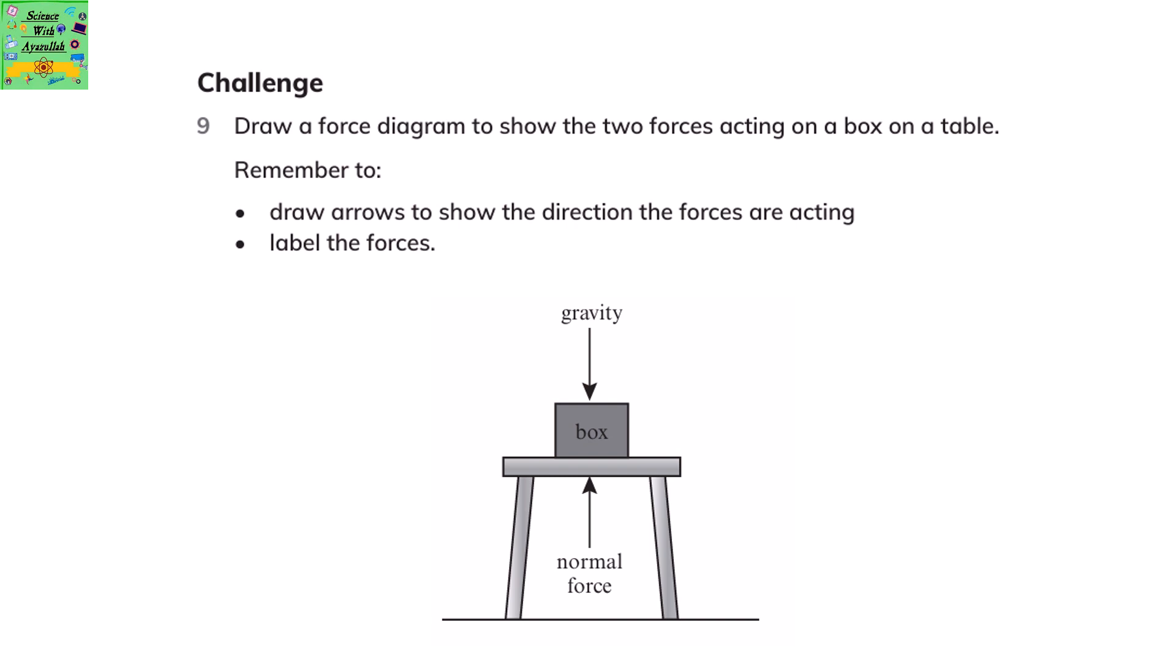Draw a force diagram to show the two forces acting on a box on a table. Remember to draw arrows to show the direction the forces are acting on and then label the forces. The box is kept on the table. The force acting towards the box is gravity that is pushing it downwards, and then the normal force is pushing the box upwards.